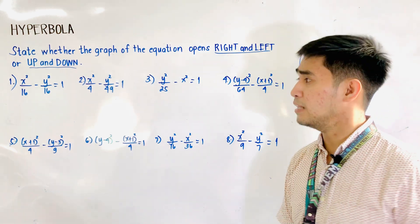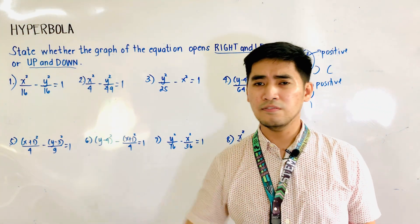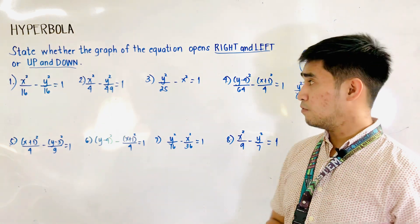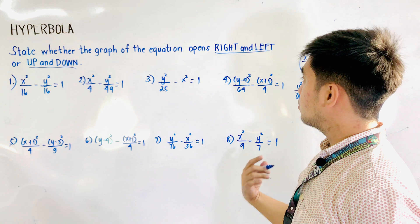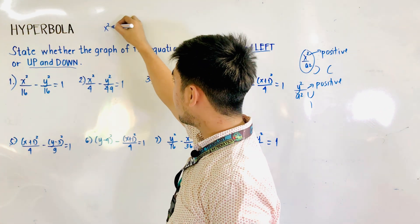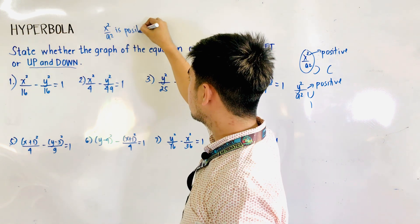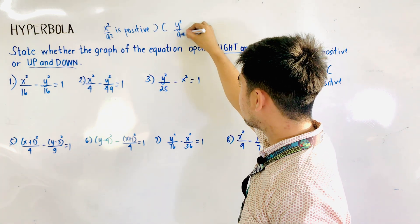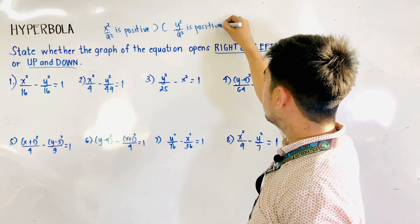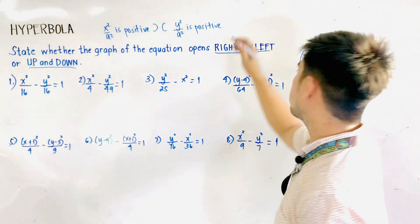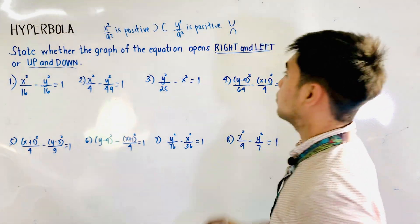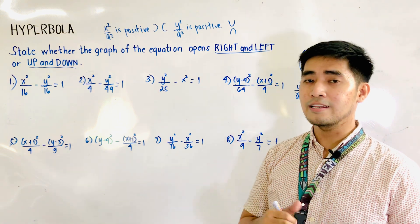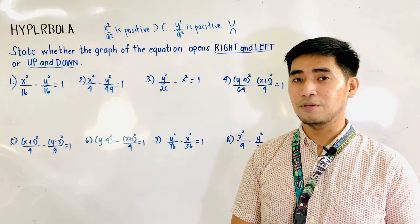Let us now try to identify the given equations. I have eight examples here written on the board. If x squared over a squared is positive, therefore the graph would be left and right or right and left. If y squared over a squared is positive, therefore the nature of the graph of the given equation of the hyperbola would be up and down. That is my mnemonic or key in order to determine the nature of the graph of the given hyperbola.